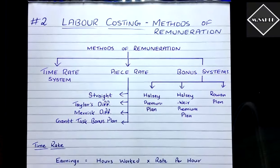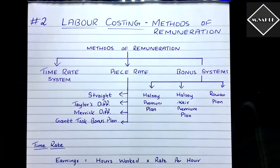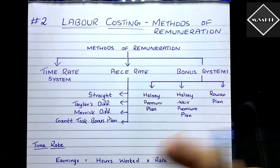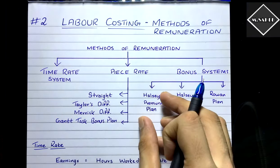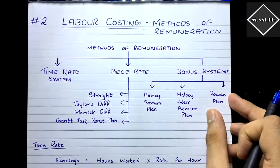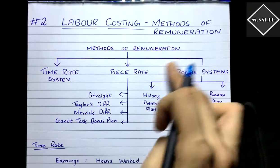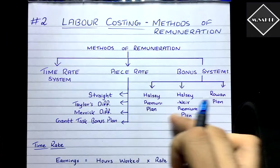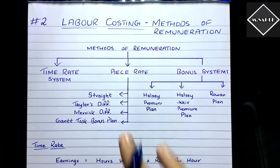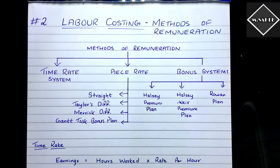Under bonus systems, we have the Halsey premium plan, the Halsey Weir premium plan, and the Rowan plan. These will be covered in the third video. In this video, we are going to focus only on the time rate and piece rate systems.